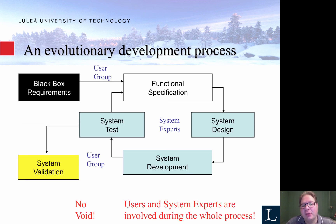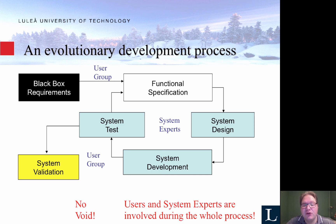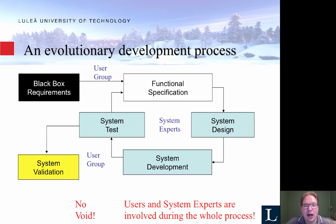Instead, there are a number of other development processes: agile development, evolutionary development, iterative development. Basically they all work so that you have users involved more frequently. You can show the system or parts of the system to users to get feedback early on, and that is a very, very important thing. In this evolutionary development process, we have requirements, functional specification, all those steps as mentioned before, but they are shorter iterations — maybe a development phase of only a month or two — and then the user gets involved and has their say. You also have system experts that can comment on the software.